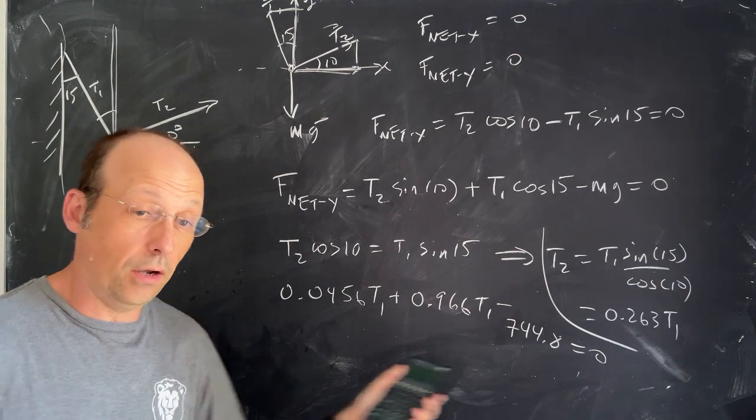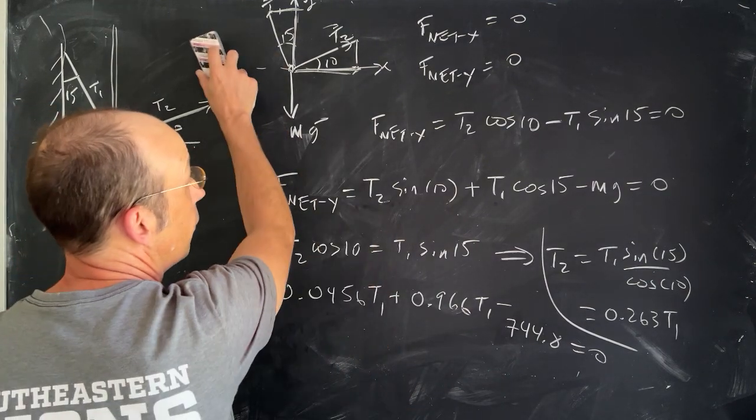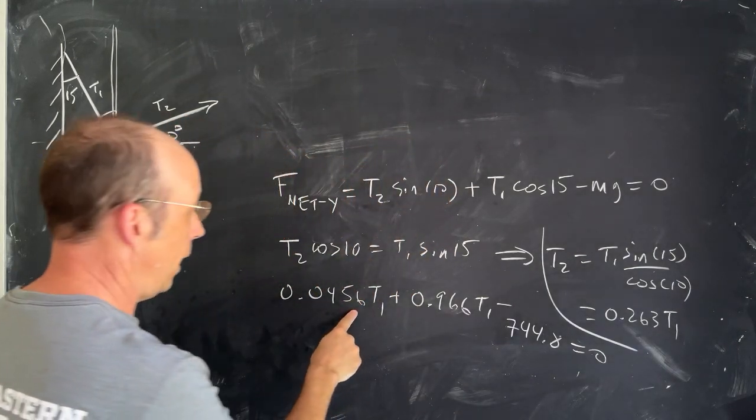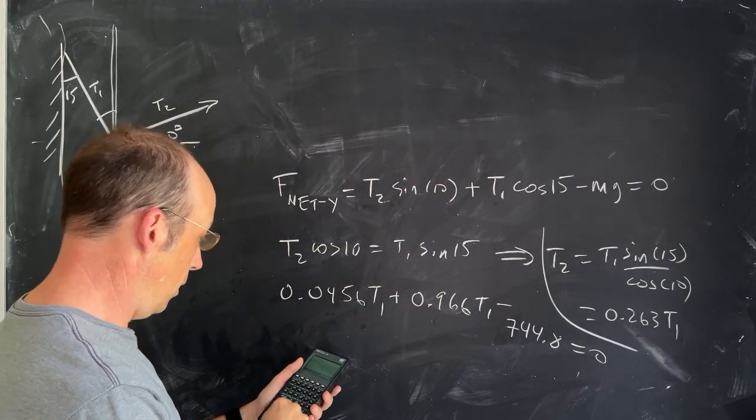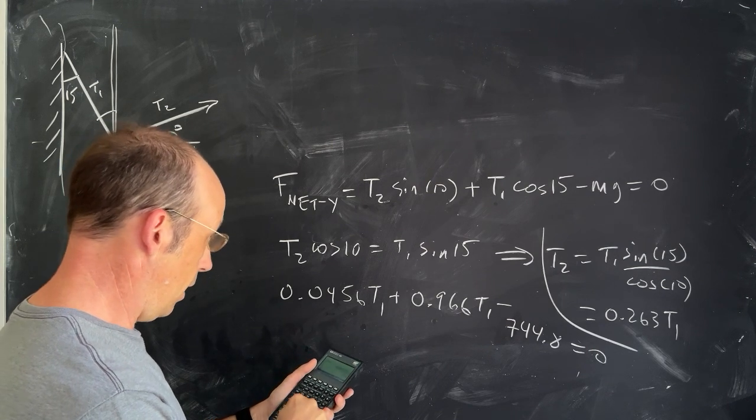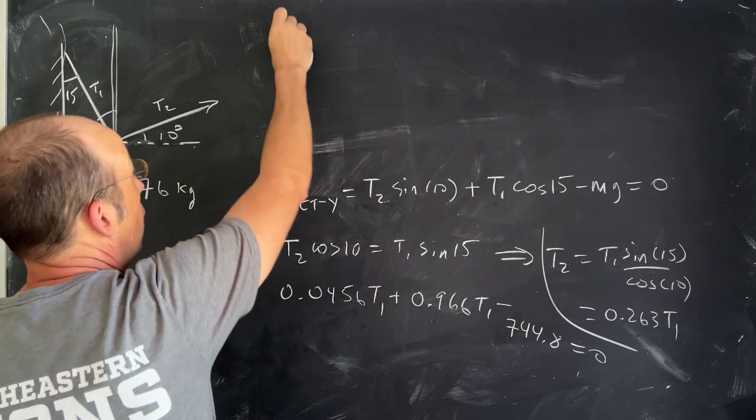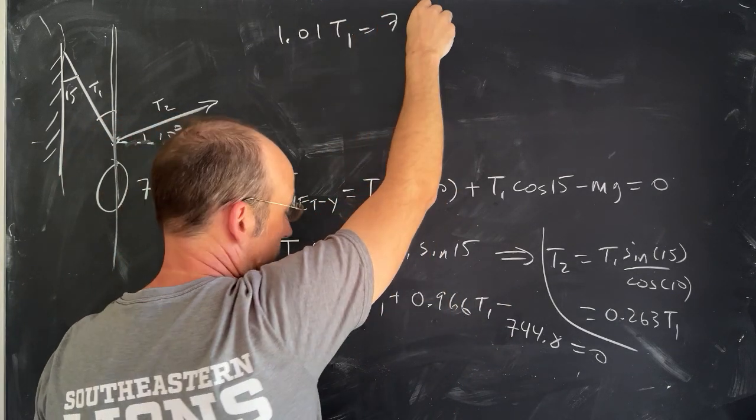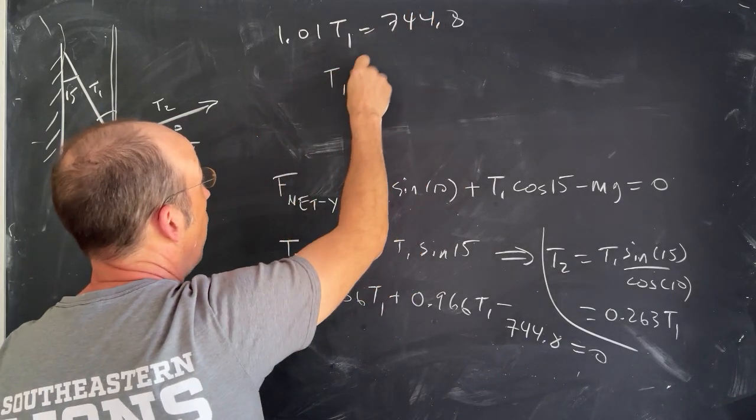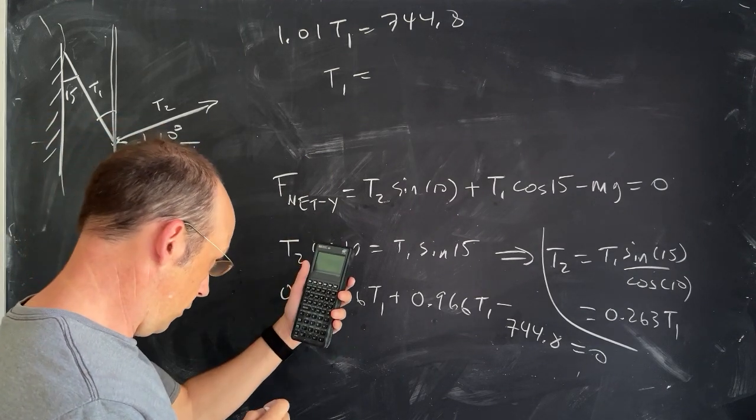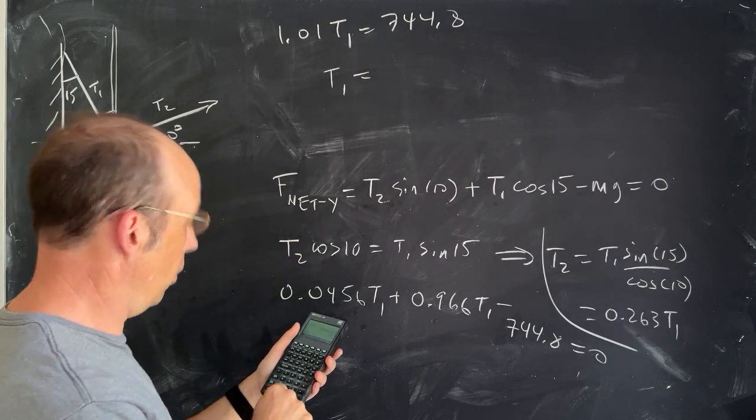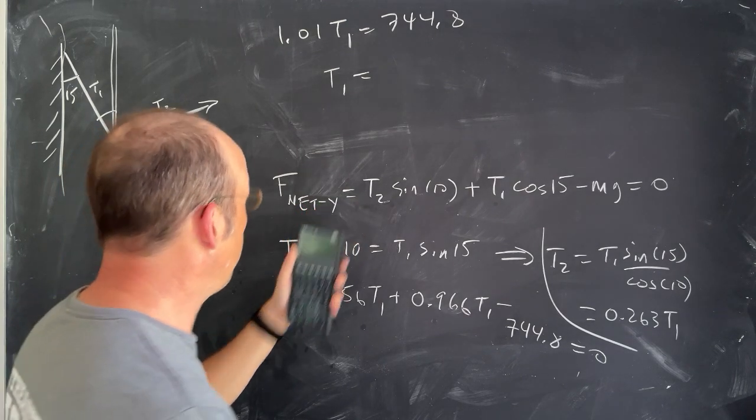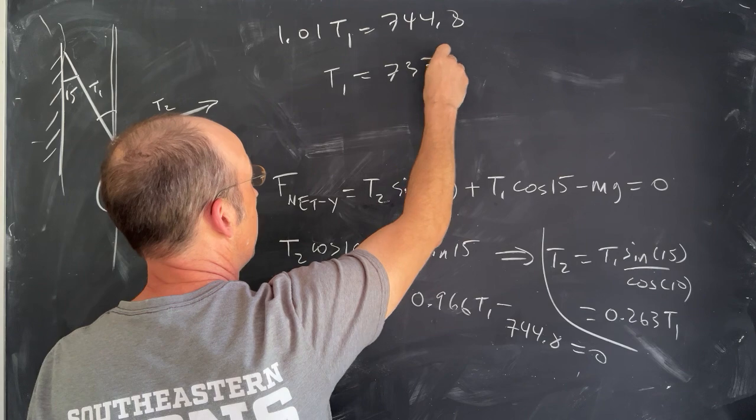So now I only have one equation with one unknown. I can solve this for T1. So I'm going to add these two together. I get 0.0456 plus 0.966, which is 1.01 T1, and that equals 744.8. And then I can solve for that by dividing by 1.01, which gives me 737.4 newtons.